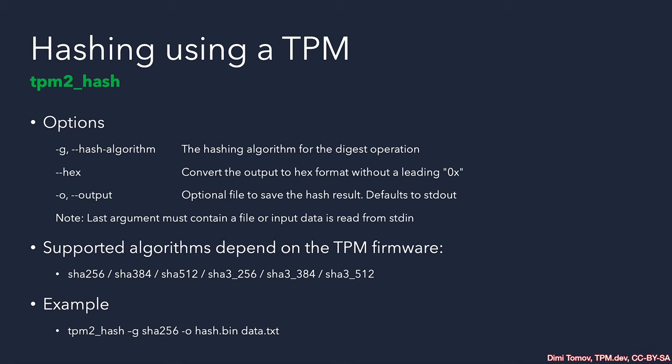To perform hashing using a TPM, we have another tool with the nice name TPM2_Hash. Similar to other tools, as the last argument it takes a file name; otherwise it reads data from standard input. We are required to specify a hashing algorithm using the -g option — the same option used when generating keys. You can check the supported algorithms by the TPM2 tools and how the different abbreviations and names translate. Usually it is a one-to-one mapping, and we have the standard --hex and -o options that we are very familiar with by now.